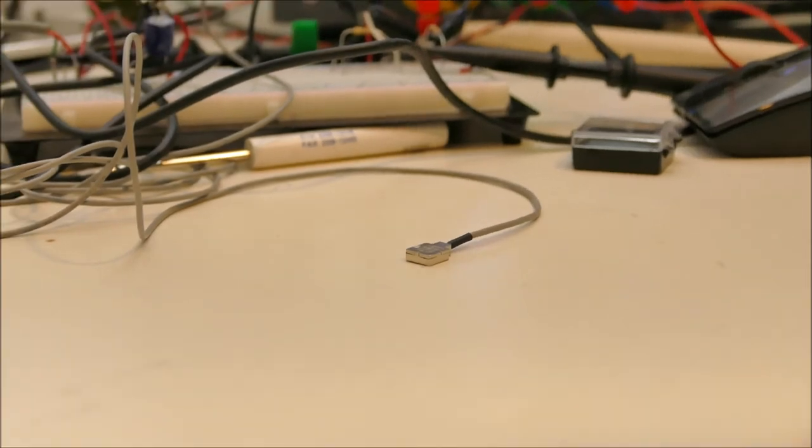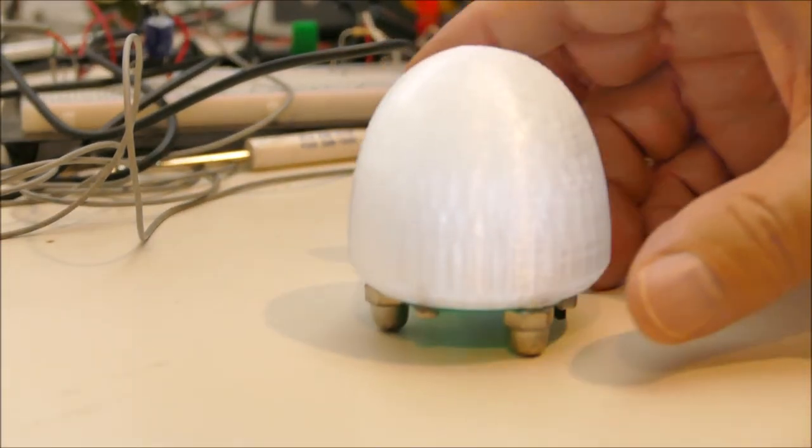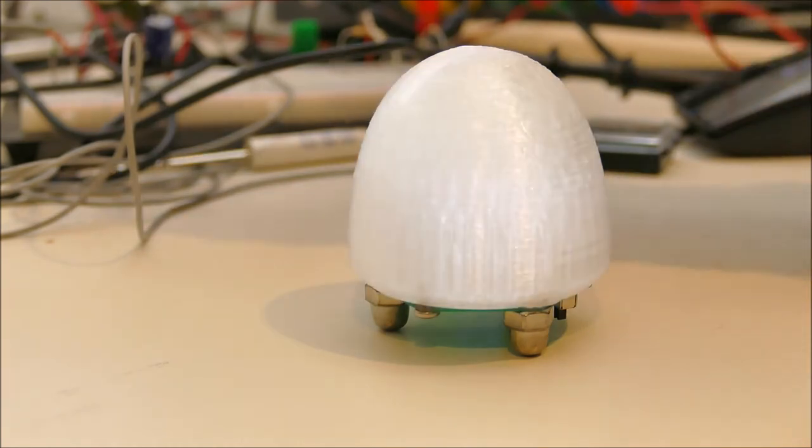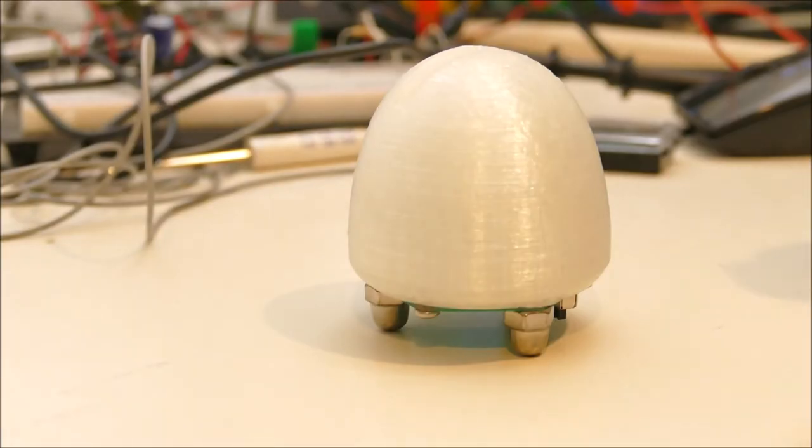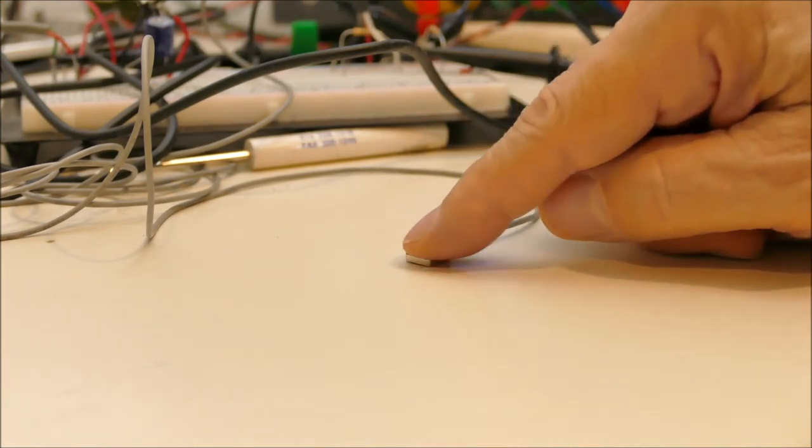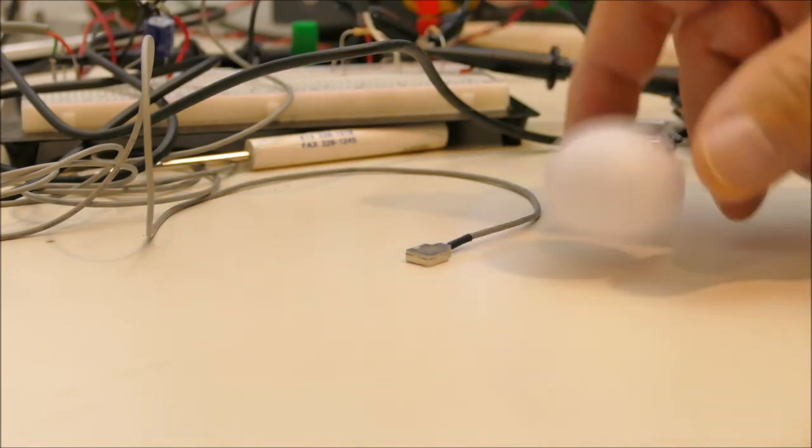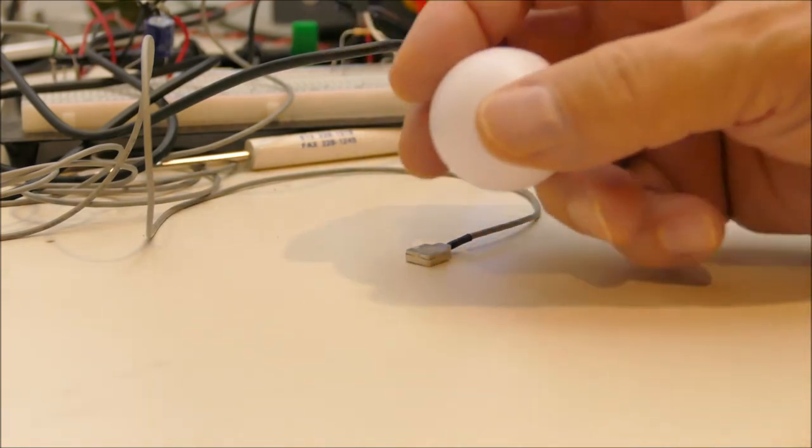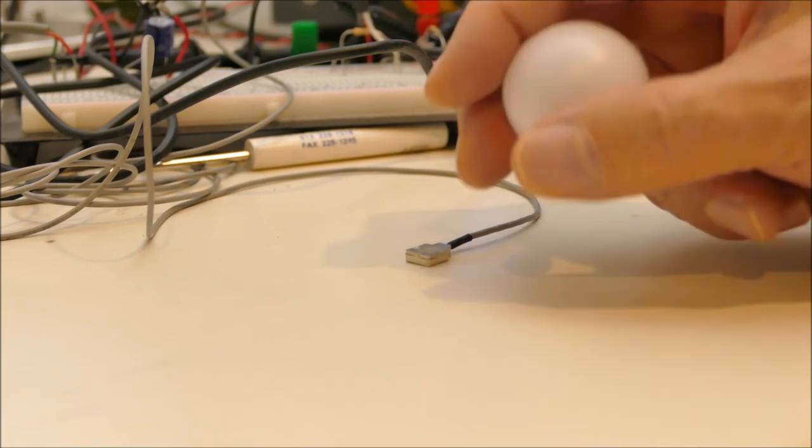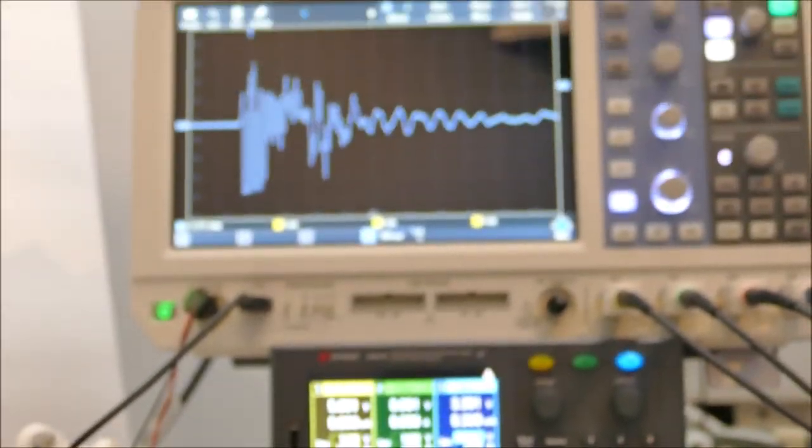For those that saw my intro with my little device here that can sense a bouncing ball, I just want to prove that this sensor is even more sensitive. So this is the vibration sensor and I'll just be dropping this ball. In fact just about one inch and we can look at it up on the scope.